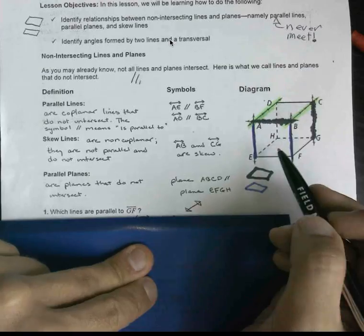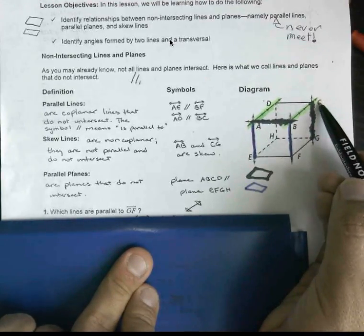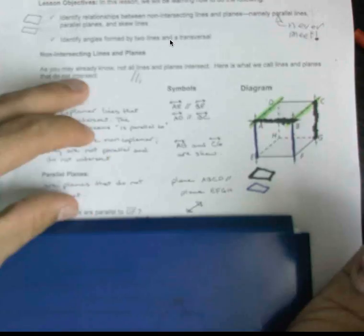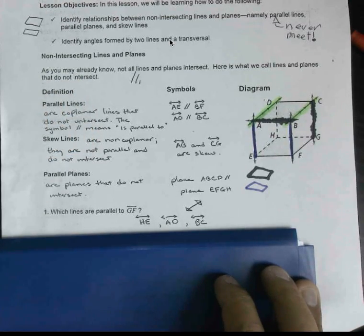We're looking for lines that run parallel to that. E to H is definitely gonna work. A to D is gonna work. C to B is gonna work because these are all going from the back towards the front. So that's why we can say all three of those are fair game.